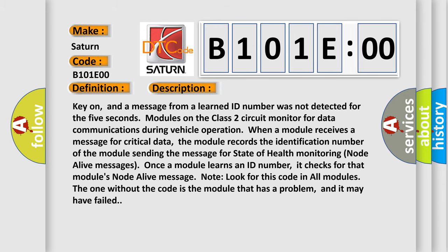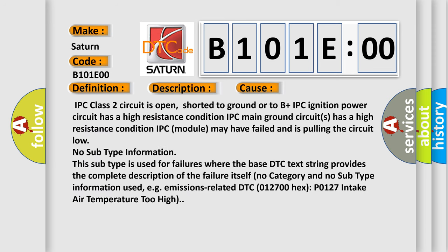This diagnostic error occurs most often in these cases: IPC Class 2 circuit is open, shorted to ground or to B plus. IPC ignition power circuit has a high resistance condition. IPC main ground circuits have a high resistance condition. IPC module may have failed and is pulling the circuit low.